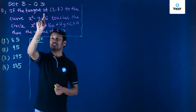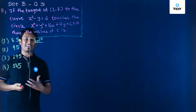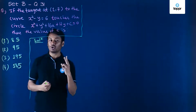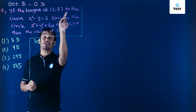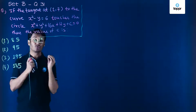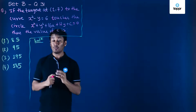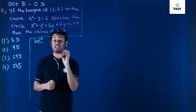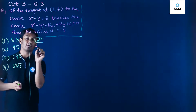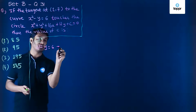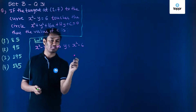The line is a tangent to the given curve which is x squared minus y equal to 6. To find the equation of any line we will need two things: the slope of the line and a point through which the line is passing. We already have the point; we will have to find out the slope. The given curve is x squared minus y equal to 6, which I can write as y equal to x squared minus 6.